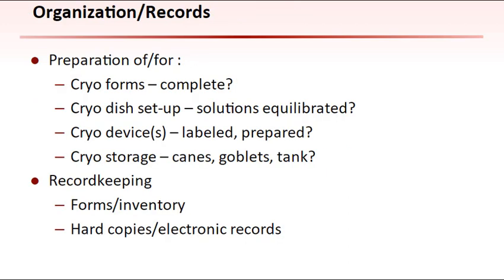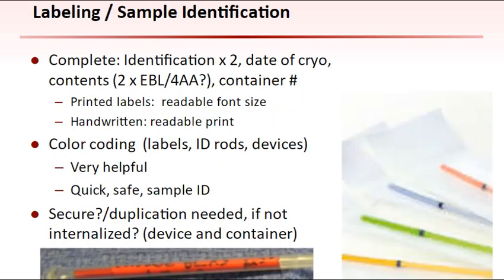Listed here are things to consider and do before initiating the actual vitrification procedure. Events during the procedure are timed events and occur quickly, requiring precision. Clear, well-positioned, identifiable labels on vitrified samples are a key to optimal storage and handling of specimens. A good label includes complete identification by two different methods, the date of cryopreservation, the contents, and the container number. Printed labels should have a readable font size, while handwritten labels should have legible print. Many manufacturers offer color-coded labels or devices that can serve as a double check. Is the label secure? Can the sample be identified if the label were removed?